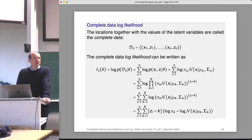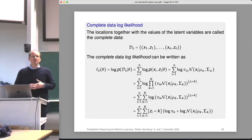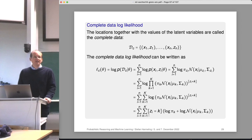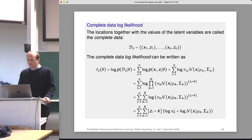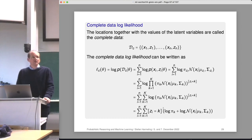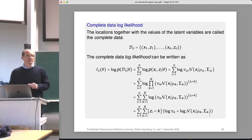In the mixture model formulation, we had a summation and couldn't get the logarithm inside it. But there is a rule for getting a logarithm into a product — we can exchange them and turn the product into a summation. Now we have the logarithm in front of a product raised to a power. Using the rule that log(a^b) = b·log(a), we can drag out the exponent in front. This gives us the logarithm of pi sub k plus the logarithm of the Gaussian distribution, which makes taking derivatives much simpler.